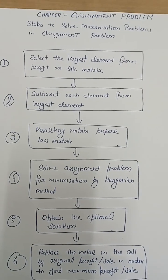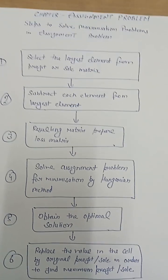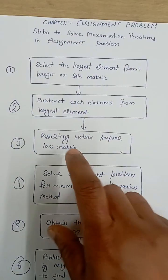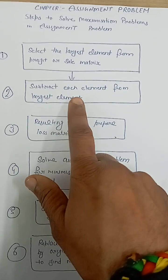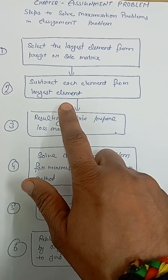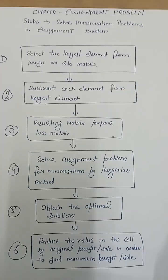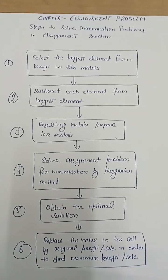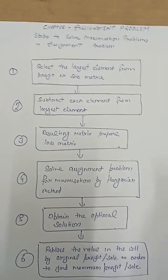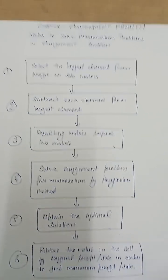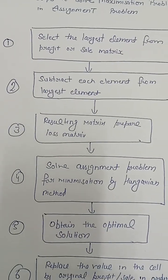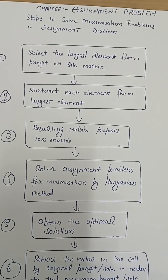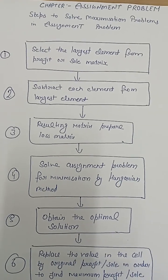After selecting the largest element from the profit or sale matrix, then the second step is subtract each element from the largest element. In the second step, we subtract each element from the largest element.